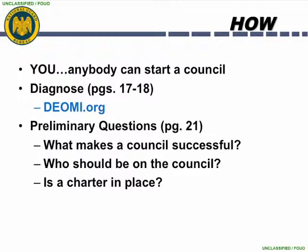Page 21 of the guide provides additional preliminary questions if your state, territory, or district does not already have a diversity council or if the council is inactive. The questions to ask yourself are: Is a charter in place? See Appendix D for the sample JDEC council charter. Who should be on the council? See Appendix C for the sample TAG JDEC appointment letter with recommended membership. What makes a council successful? See Appendix A for the sample TAG checklist, providing critical information to your TAG concerning the position of diversity in his or her state, territory, or district. All of these documents will be important to establish the current state of your organization and create a plan for where you want to see it in the future.